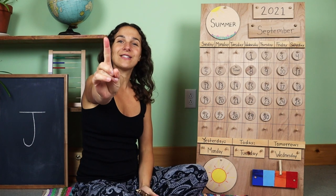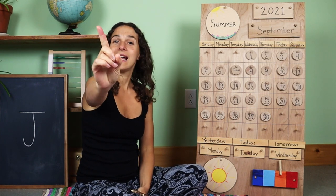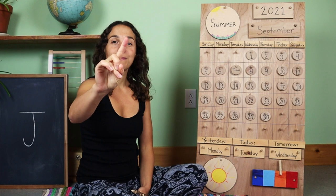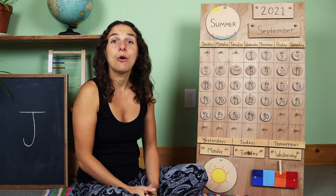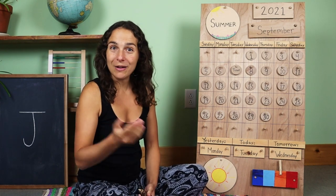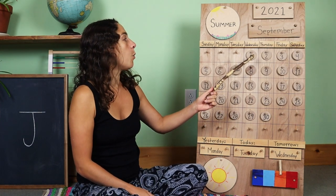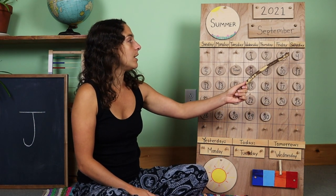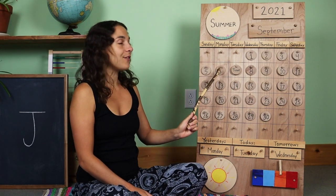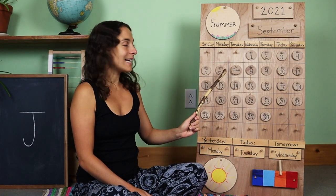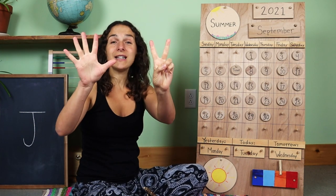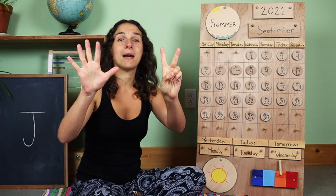Let's take out our counting fingers like this. We're going to warm them up just a little bit and give them a stretch. Let's see how many days we've had so far in the month of September. Will you count with me? One, two, three, four, five, six, seven. We've had seven days so far in the month of September.